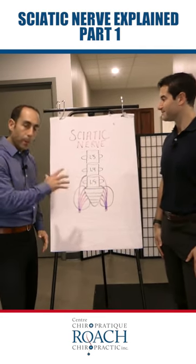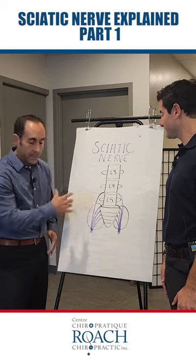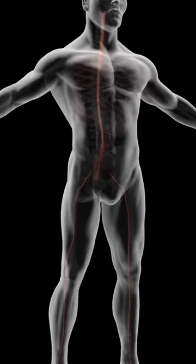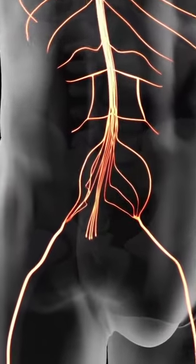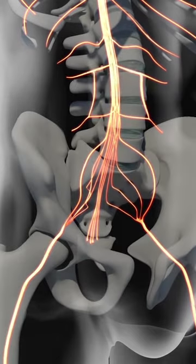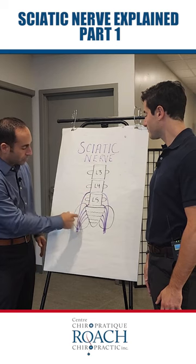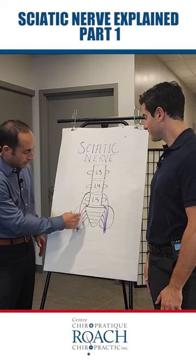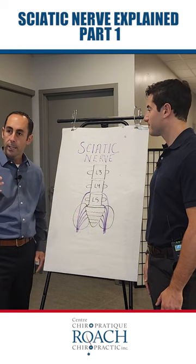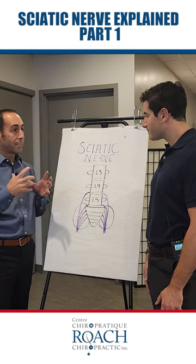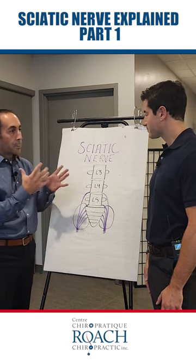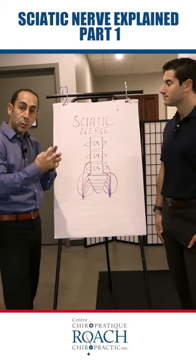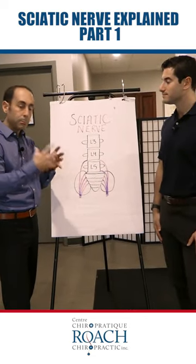Here we have the lower back, which has five lumbar vertebrae. We're going to take you through a journey of where the sciatic nerve goes and from what it's formed. We have the L4 nerve root, the L5 nerve root, and then we have this structure here called the sacrum — five different segments that eventually fuse into one big bone.